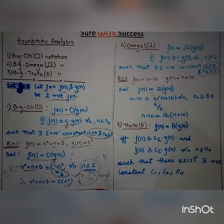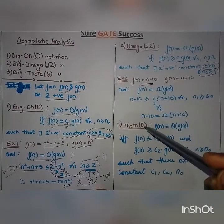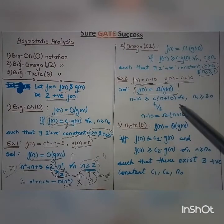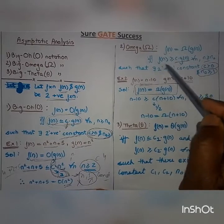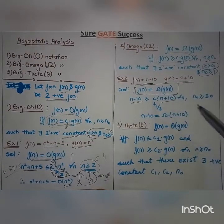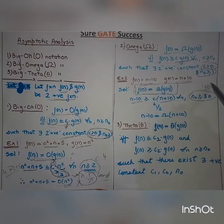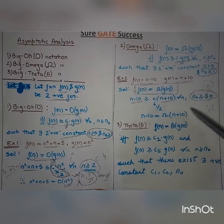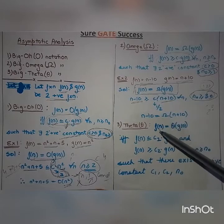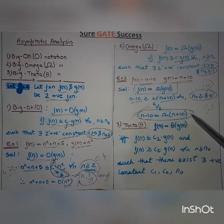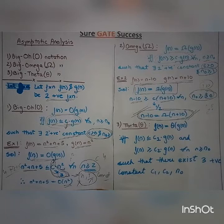Let us understand Omega with an example. f(n) is given as n − 10 and g(n) is given as n + 10. We have to prove that f(n) is Omega of g(n). Substituting values by brute force — trying n = 10, n = 20, and then n = 30 — if we take c = 1/2, then the condition f(n) ≥ c·g(n) is satisfied.